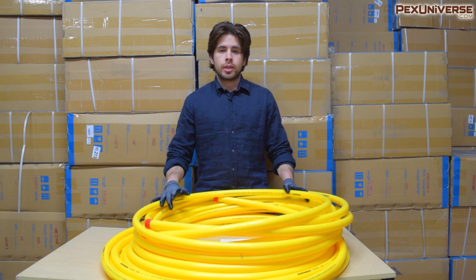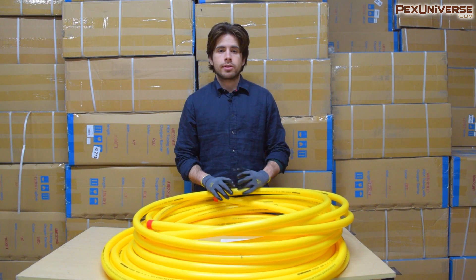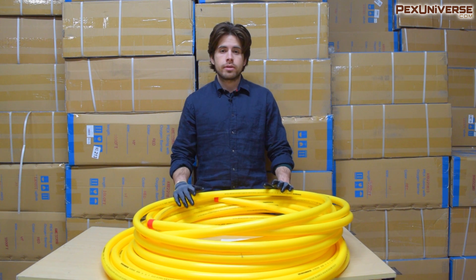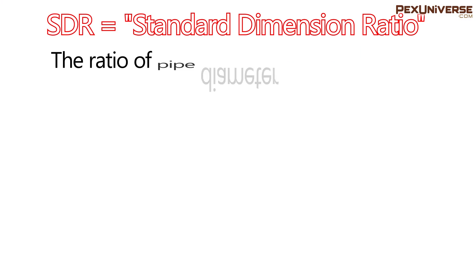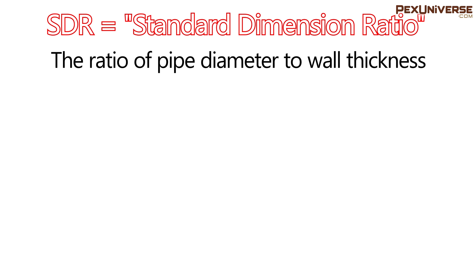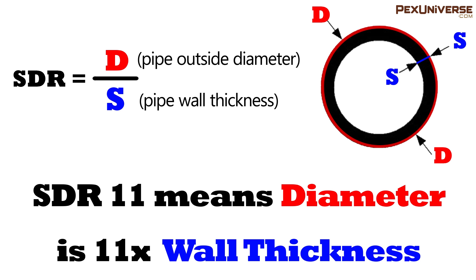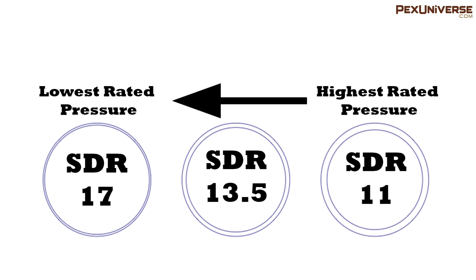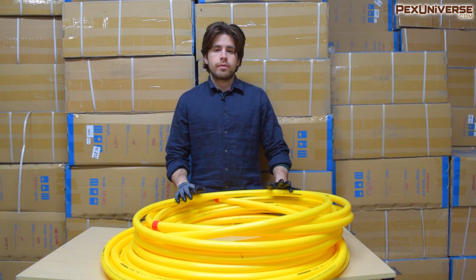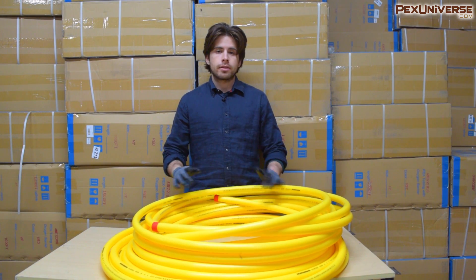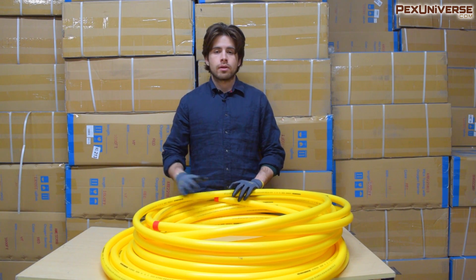All of our PE pipe, components, and fittings are SDR 11. SDR stands for Standard Dimension Ratio — it's the ratio of pipe diameter to wall thickness, where D equals outside pipe diameter and S equals pipe wall thickness. SDR 11 means the diameter D is 11 times the wall thickness S. Rated pressure is higher for low SDR ratios and lower for higher SDR ratios. SDR 11 is the general standard for PE pipe, components, and fittings.